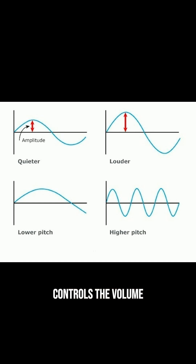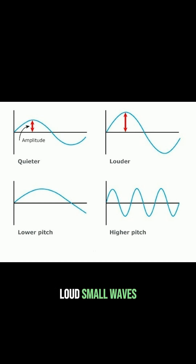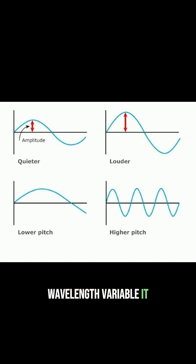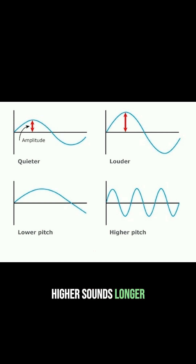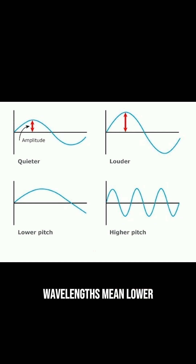Amplitude controls the volume. Big waves are loud, small waves are soft. And then there's the wavelength variable — it shapes how we hear the pitch. Shorter wavelengths mean higher sounds, longer wavelengths mean lower ones.